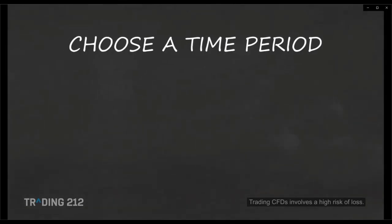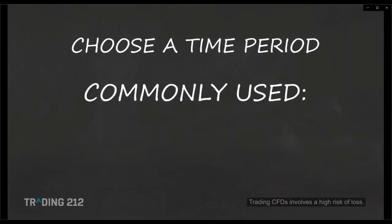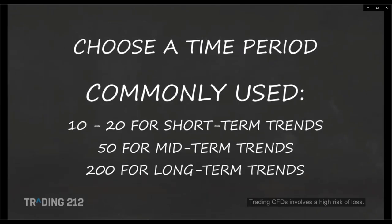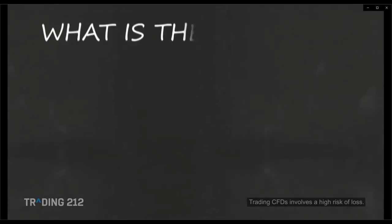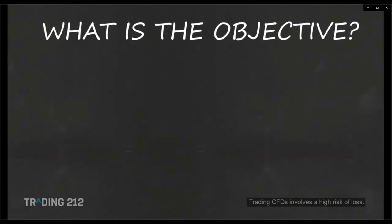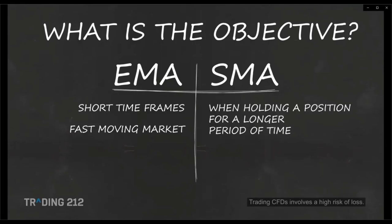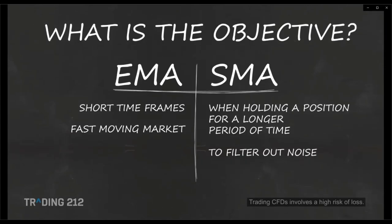Besides the type of moving average, you must decide on the time period, which largely depends on the trend you are analyzing. Commonly used periods are 10–20 for short-term trends, 50 for mid-term, and 200 for long-term trends. Use exponential moving averages for shorter time frames or fast-moving markets for more emphasis on latest prices. Use simple moving averages if holding a position longer — the EMA might be too sensitive and give false signals — or if you just want to filter out noise to determine overall market direction.